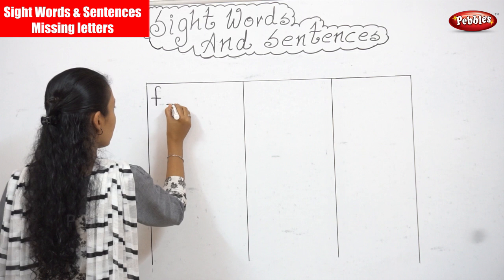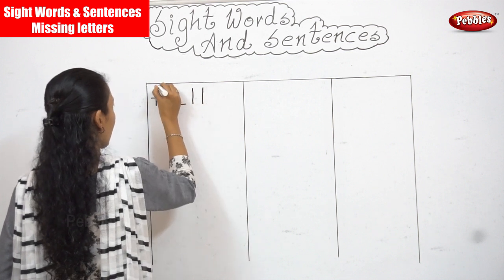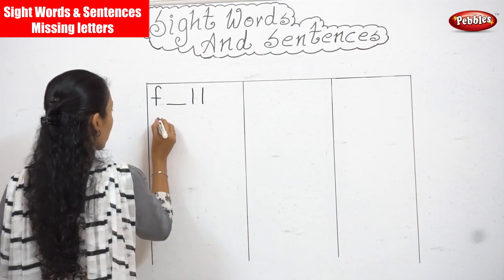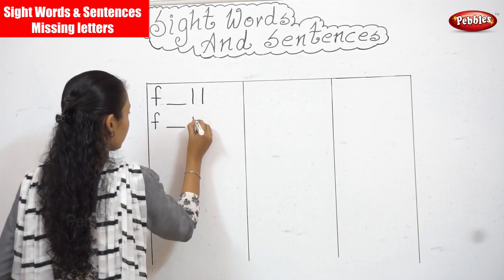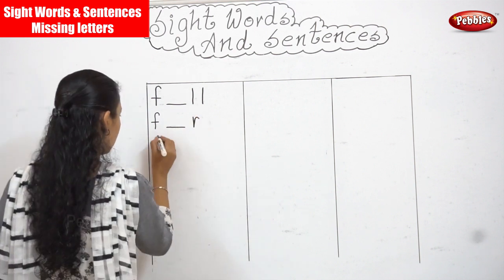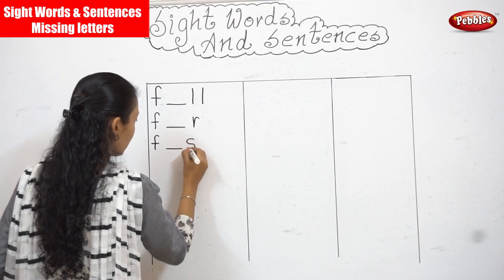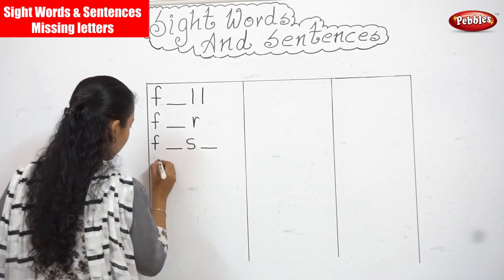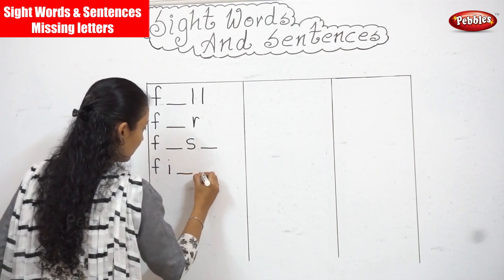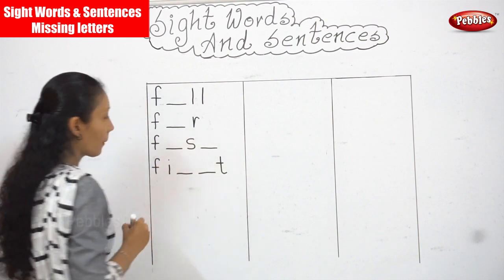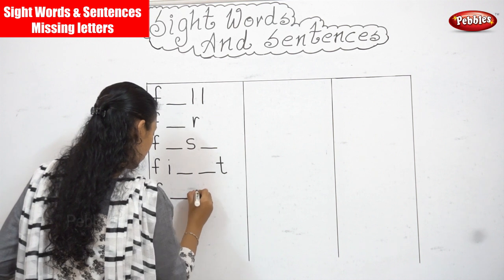Now, F-dash-L-L. Before I fill it, I want you to recollect the words. Next one, F-dash-R. Next, F-dash-S-dash. All these words that you have learned. F-I-dash-dash-T. Next, F-dash-Y.